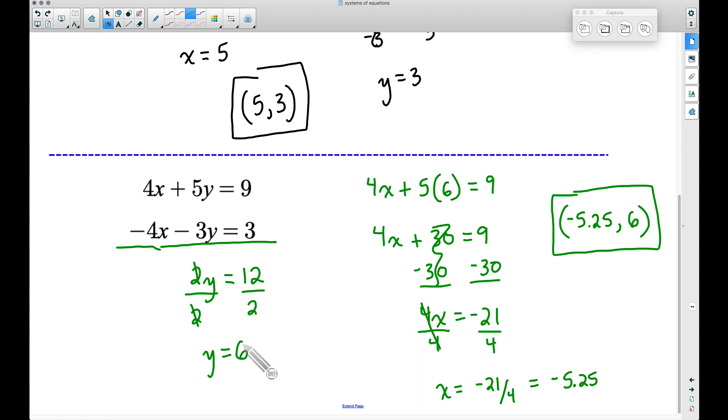Repeating that process down here: negative 4 times x, that's negative 4 times negative 5.25. A negative times a negative is a positive, so we have 21 minus 18, because we're taking 3 times 6, our y value of 6.